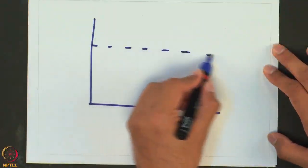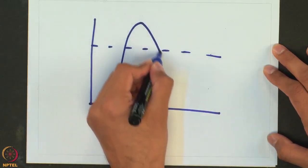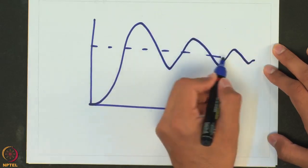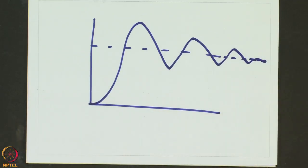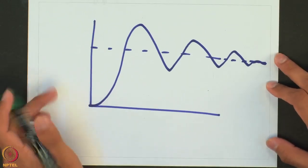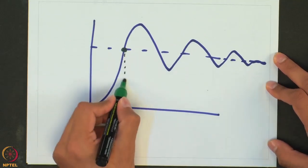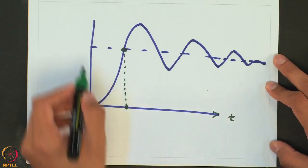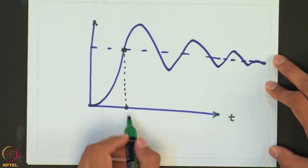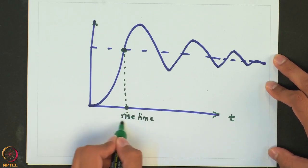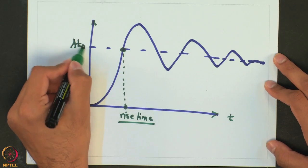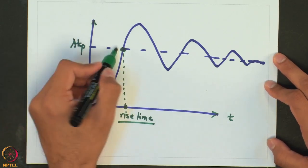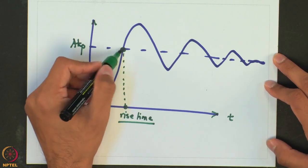The first parameter is rise time. If we draw the second order response — this is the ultimate value — the rise time is defined as the time at which the response value reaches the ultimate value for the first time. It may not stay there, but rise time is the time it first reaches AKP.